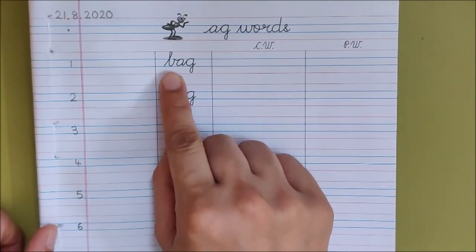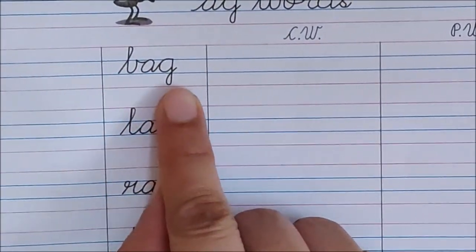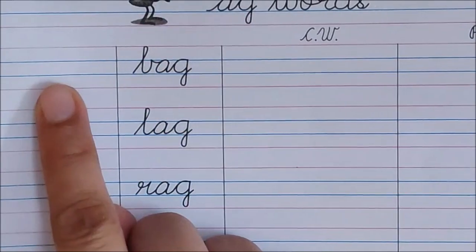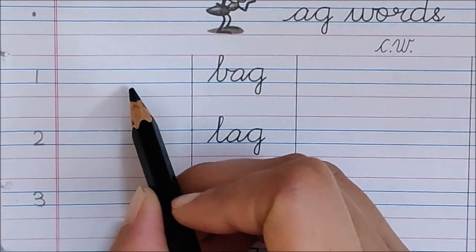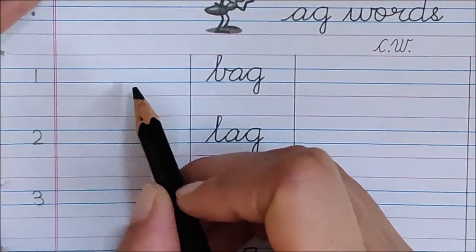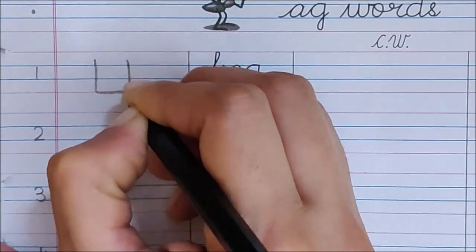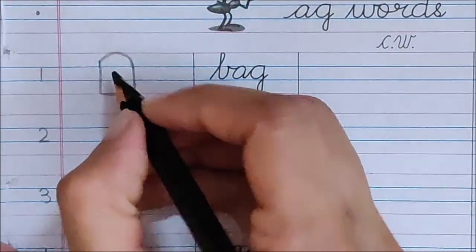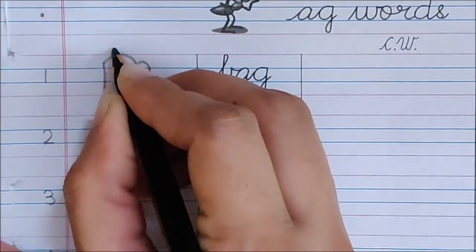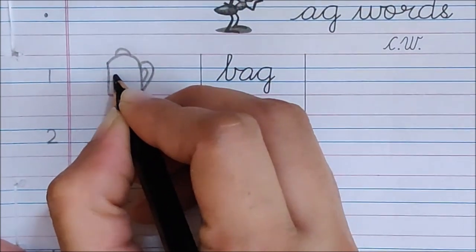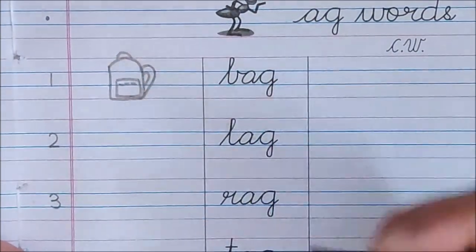Now children, let us read the first word. Read with me children. So children, here with your black color pencil, draw bag with me. You can draw with your writing pencil also. This is a bag. These are the straps of the bag. And this is a pocket. This is a bag.